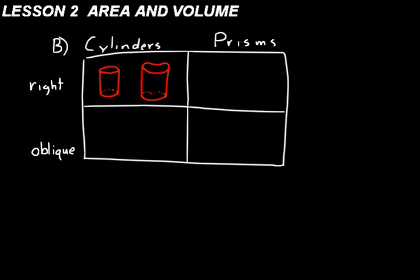Compare those right cylinders to oblique cylinders. Oblique cylinders have closed curves for bases, but their sides are not perpendicular to the bases. On a right cylinder, the sides are perpendicular. Prisms are the same idea — the only difference is that their bases are polygons.